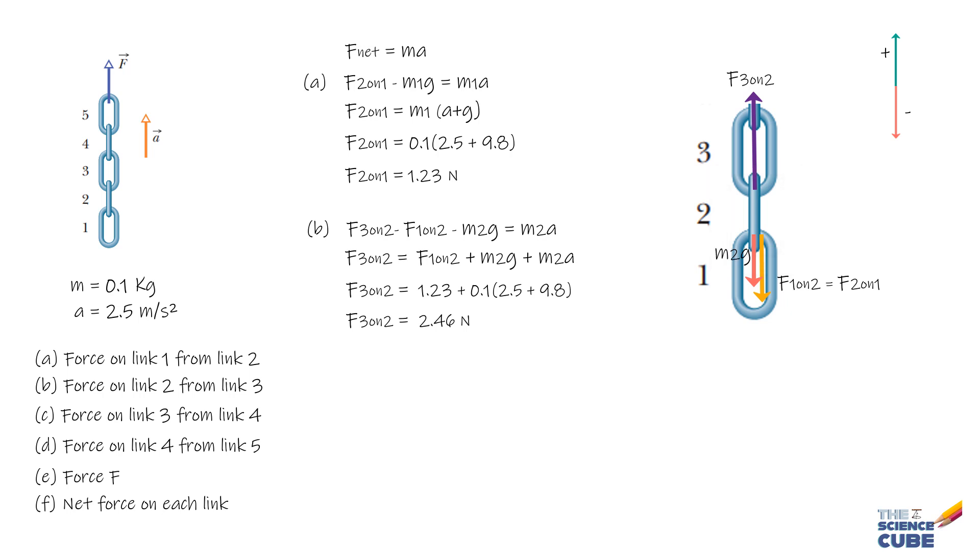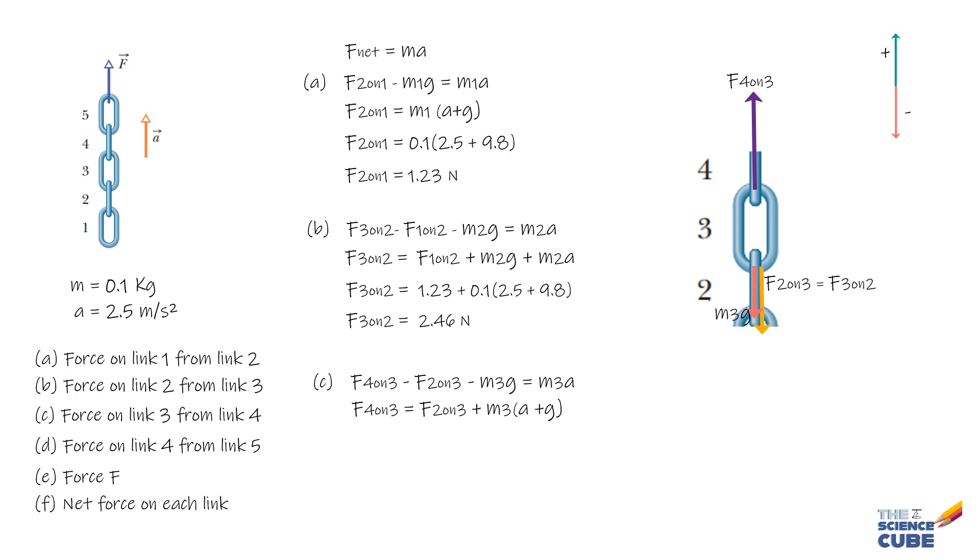Let us now find the force on link 3 from link 4, or F4 on 3. We apply the same logic, and the equation we get is F4 on 3 minus F2 on 3 minus M3G equals M3A, or F4 on 3 equals F2 on 3 plus M3A plus M3G.